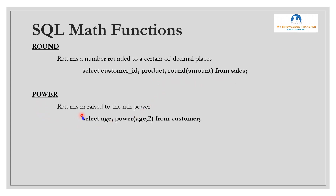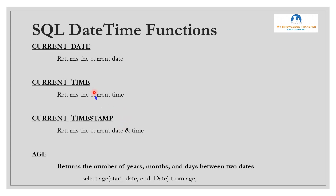POWER: returns m raised to the nth power. Basically, it multiplies a number by itself a set number of times. For example, power(10, 2) is 100, and power(10, 3) is 10 multiplied three times, which is 1000.